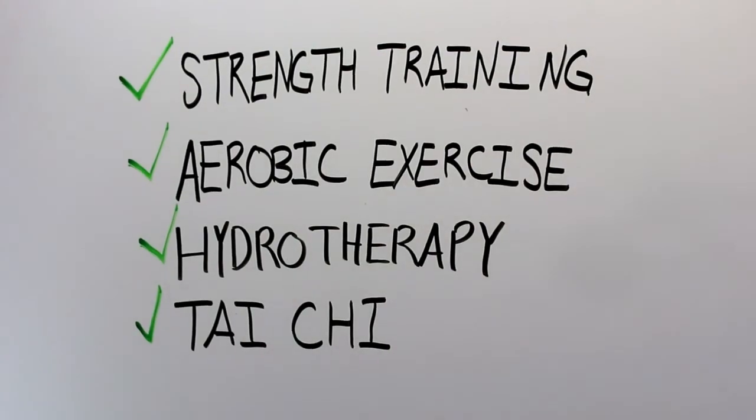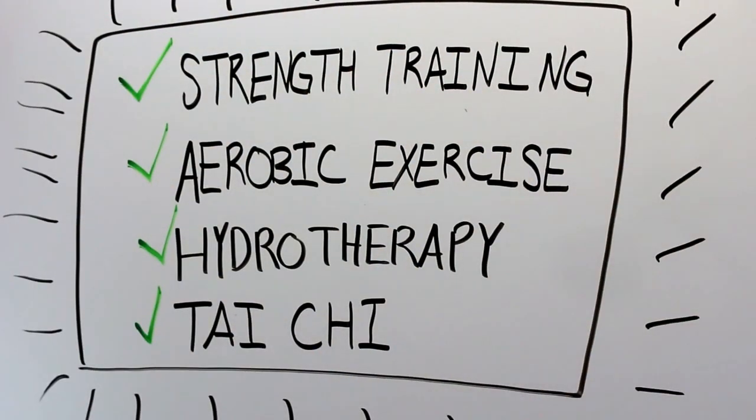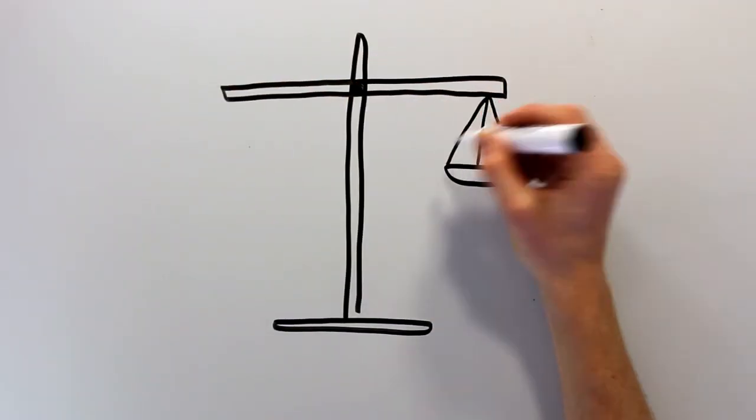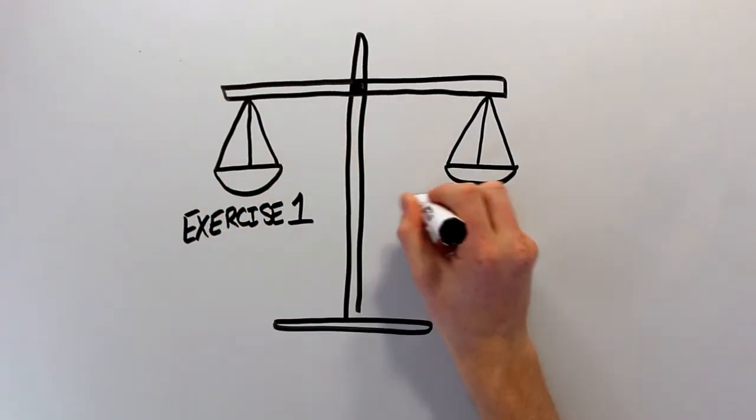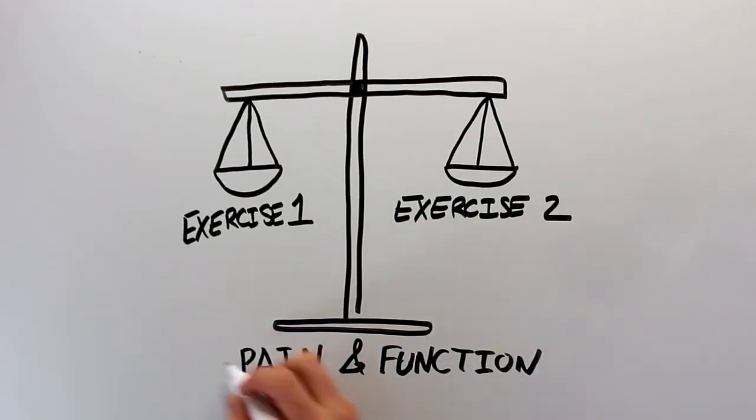Tai Chi also shows some favorable results in terms of physical function and quality of life. What does this all amount to? Basically, most types of exercise appear to be effective at reducing pain and increasing physical function.